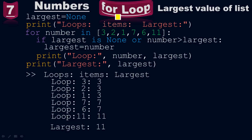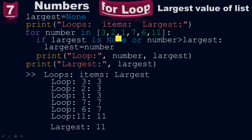We use the for loop to find the largest value of the list. Initially, largest equals to none — at the initial stage, the largest value is unknown. Then take print of 'loop: items: largest:' and use the for loop: for number in [3, 2, 1, 7, 6, 11]. Put a colon and press enter — your new line will start from here. If largest is none, or number is greater than largest, then largest equals to number.